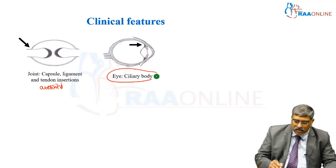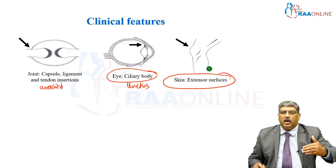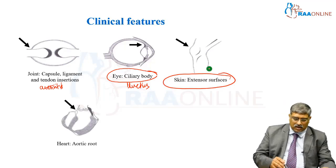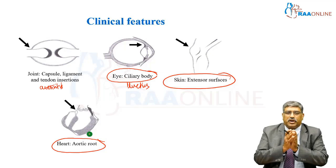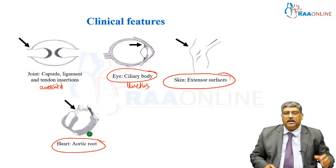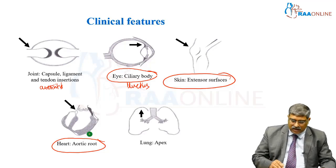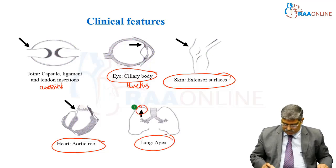The ciliary body may be involved and uveitis can be present. Coming to the skin, there might be erythema on the extensor surface. In the heart, you might have aortic root involvement which undergoes dilatation and aortic regurgitation can occur. At the apex, there might be nodules or fibrosis.